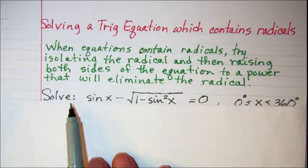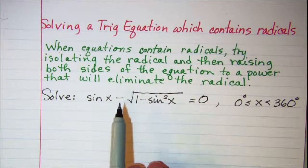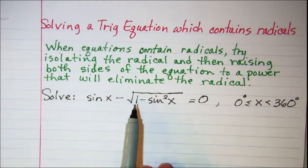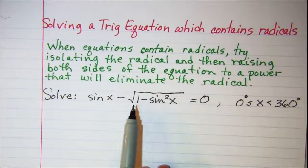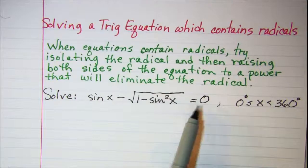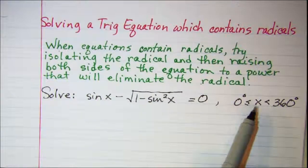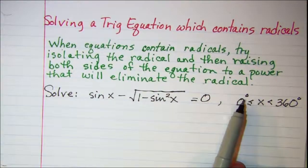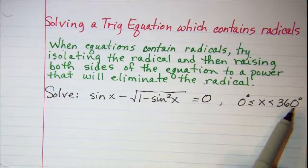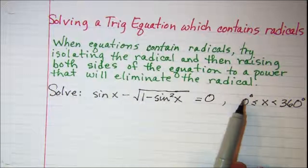The problem we'll be working is to solve sin x minus the square root of 1 minus sin squared x equals 0. Our domain is restricted to the interval from 0 degrees to 360 degrees, including the 0.